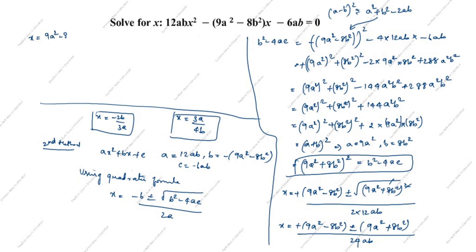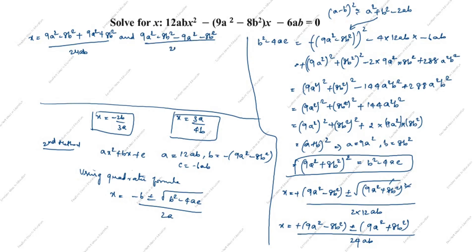We now apply the plus or minus. First taking the plus case: x equals (9a² minus 8b²) plus (9a² plus 8b²) divided by 24ab. Second taking the minus case: x equals (9a² minus 8b²) minus (9a² plus 8b²) divided by 24ab.